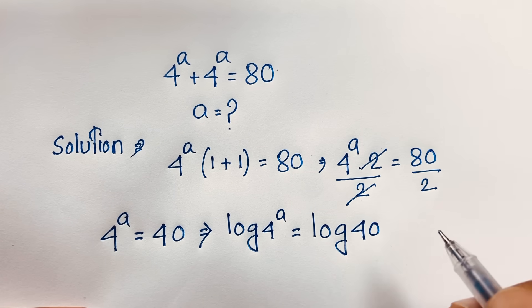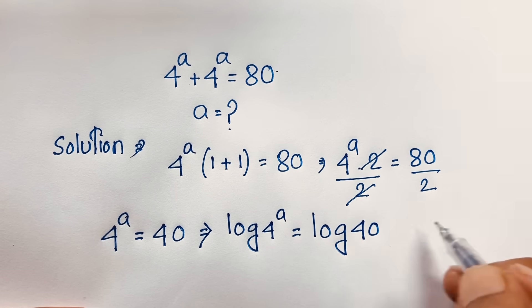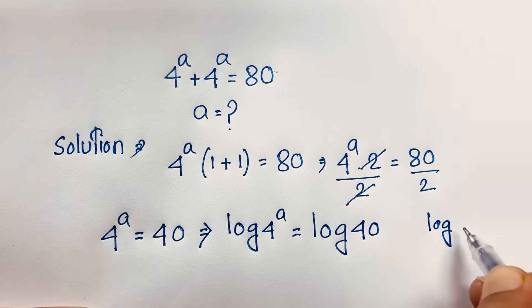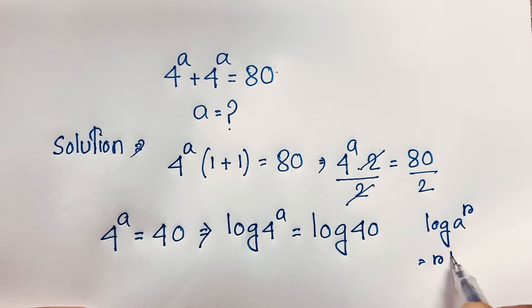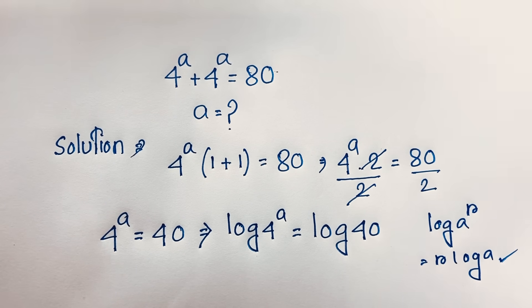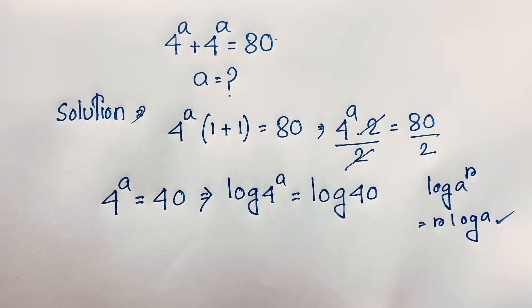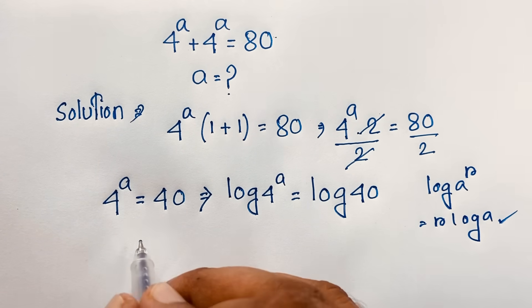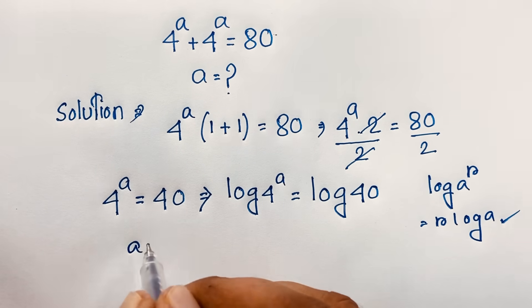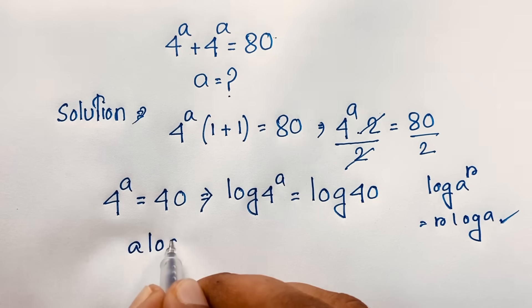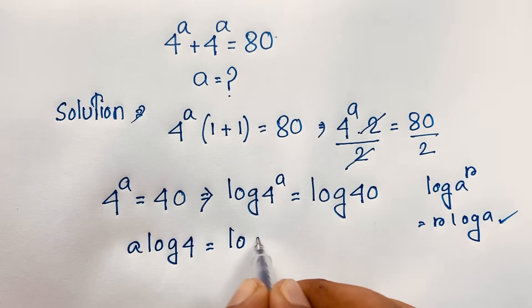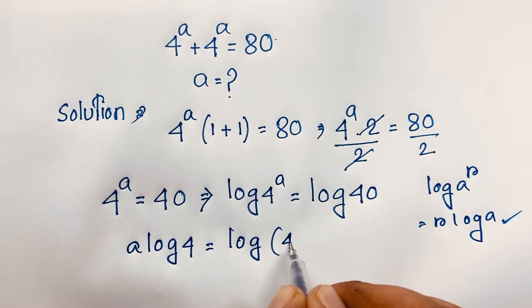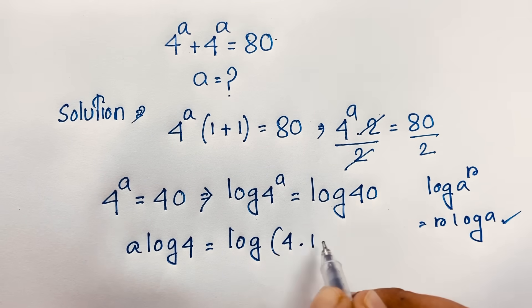According to the logarithm formula, log of a to the power r equals r times log a. Applying this formula here, it becomes a times log 4 equals log 40. Now 40 equals 4 times 10, so log 40 equals log(4 × 10).